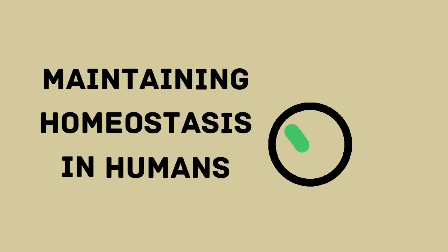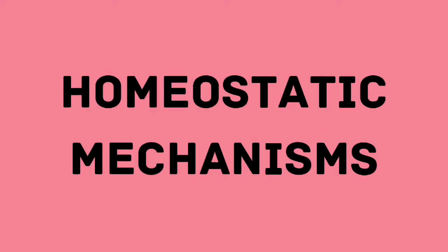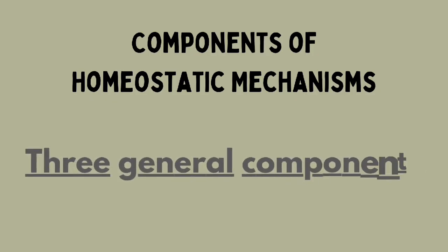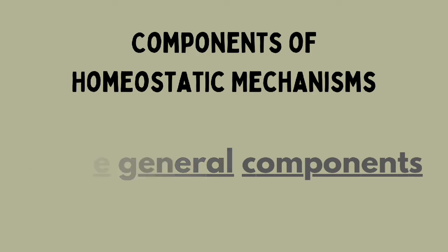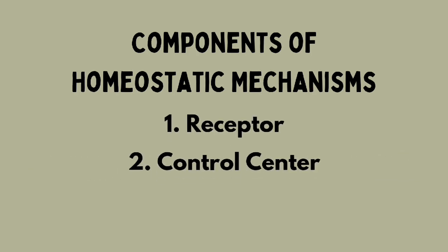In humans, maintaining homeostasis is possible because of the homeostatic mechanisms. These mechanisms are each composed of three general components, namely a receptor, a control center, and an effector.